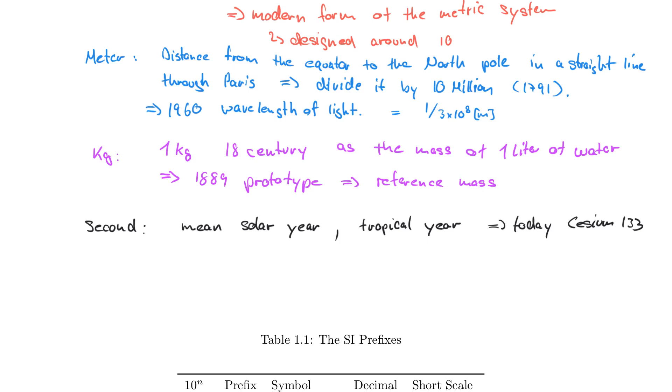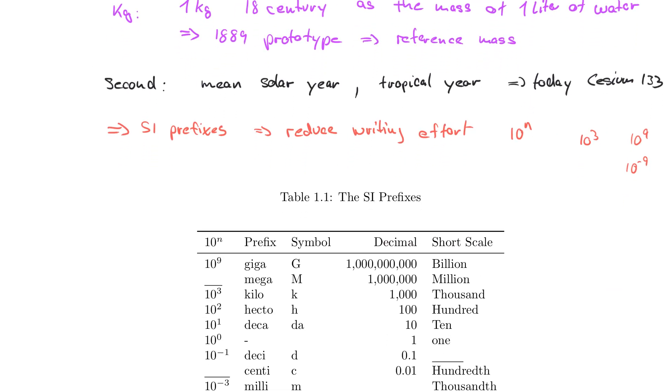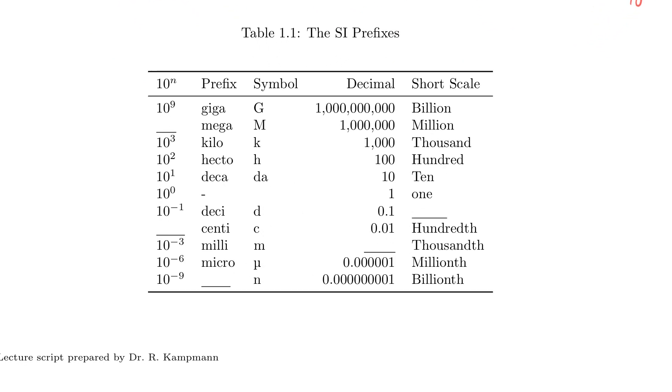Let's talk about SI prefixes. They make our life easier and reduce our writing effort because they are a multiple of three usually. We have 10 to the power of 3, 10 to the power of 9, or maybe 10 to the power of minus 9. You see some prefixes here in this table. For example, the mega is 10 to the power of 6, and we also have the centi which is 10 to the power of minus 2.